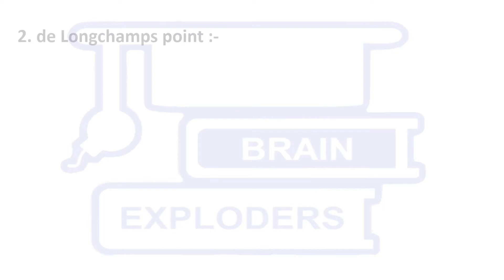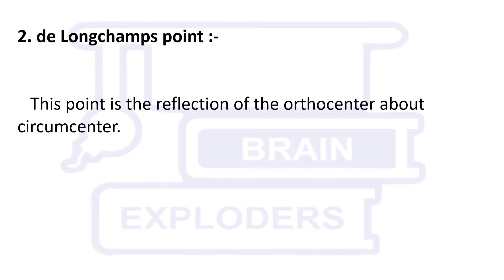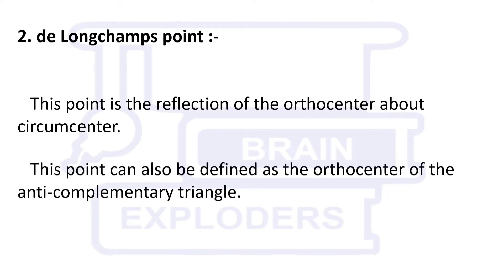de Longchamps Point. This point is the reflection of the orthocenter of a triangle about the circumcenter of that triangle. It can also be defined as the orthocenter of anti-complementary triangle.